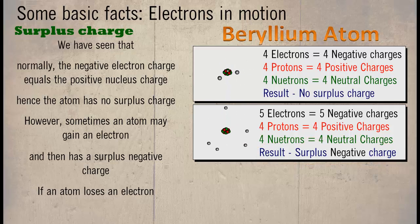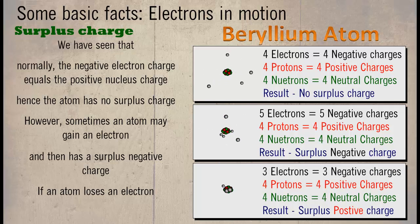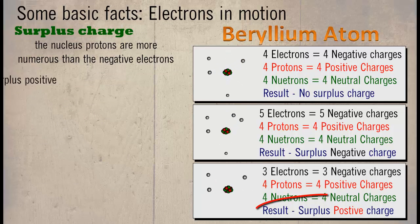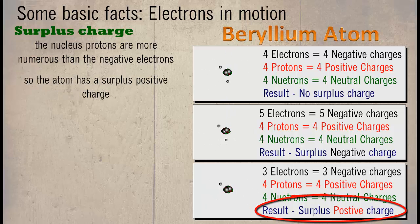If an atom loses an electron, the nucleus protons are more numerous than the negative electrons, so the atom has a surplus positive charge.